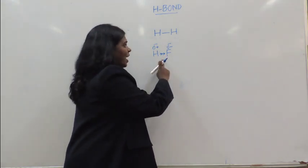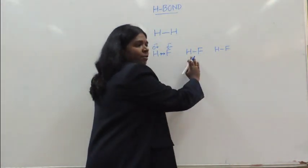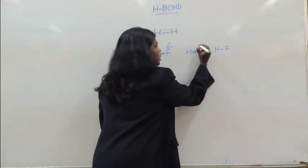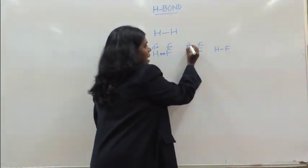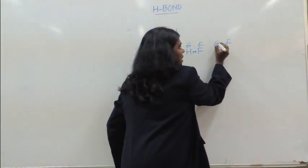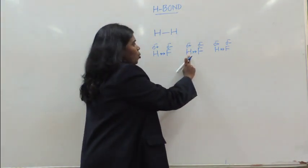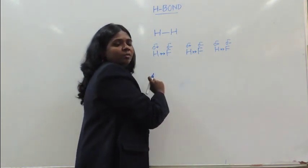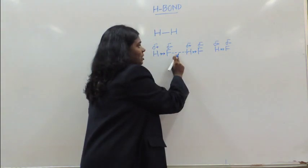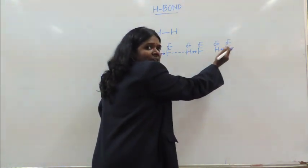Now what will happen if we have many molecules of HF? We will see the same phenomenon. The pair of electrons will be pulled a little more towards the fluorine atoms, giving it a partial negative charge and the hydrogen a partial positive charge. Because of this polarity, the hydrogen of one molecule will attract the fluorine of the neighboring molecule — because of opposite charges. A new type of interaction has developed, and this interaction is a strong force. Similarly, this fluorine is attracted by the hydrogen of a neighboring HF molecule.